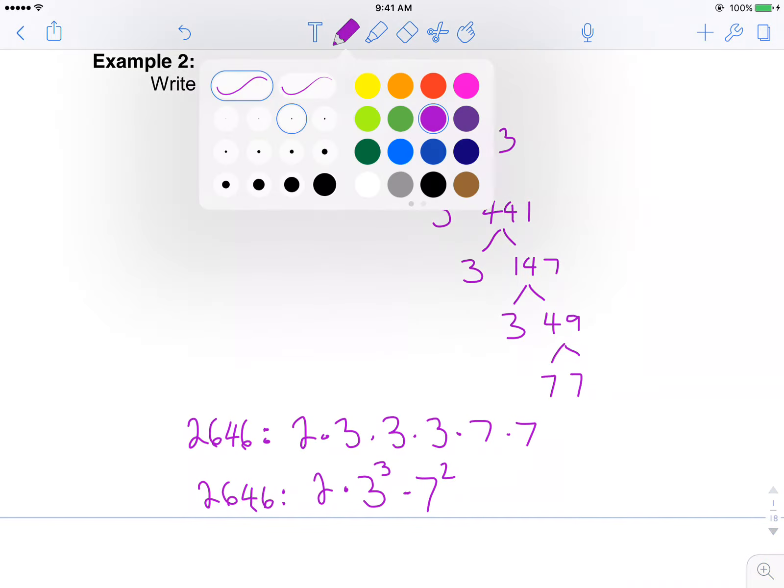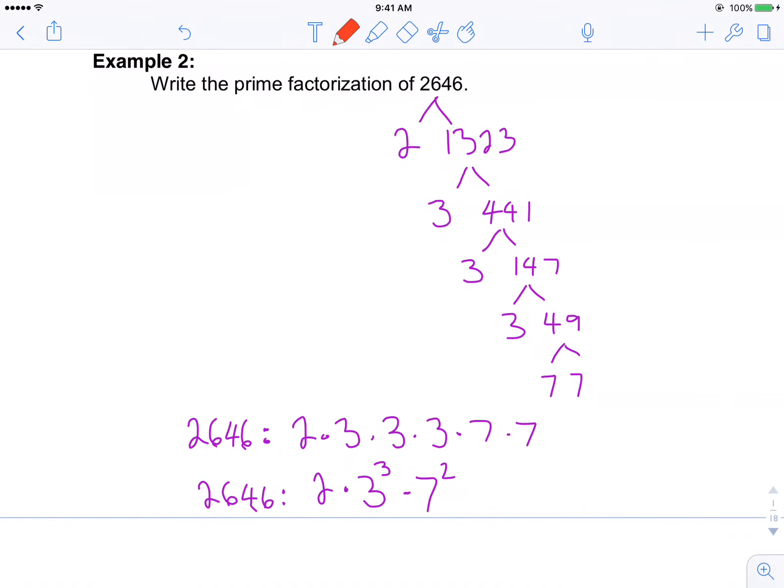Well, knowing that 2,646 is an even number, I know that it's going to divide by 2. So I divide it by 2, and I get 1,323.